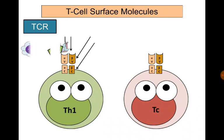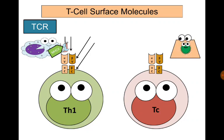The antigen is attached to a T-cell through the variable portions of both alpha and beta chains. T-helper cells only identify antigens attached to MHC class 2 molecules on the surface of antigen-presenting cells, while T-cytotoxic cells identify antigens attached to MHC class 1 molecules on the surface of any body cell.